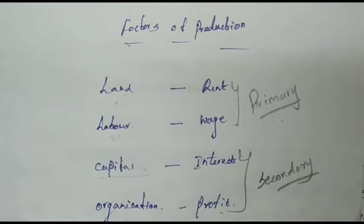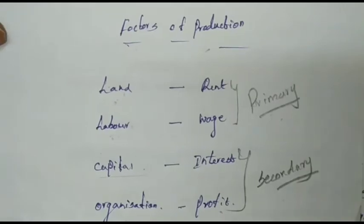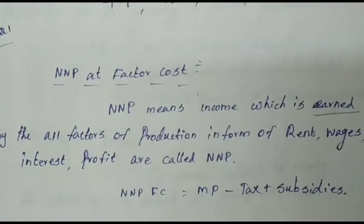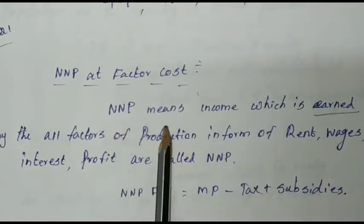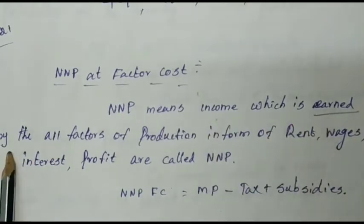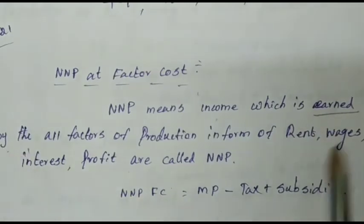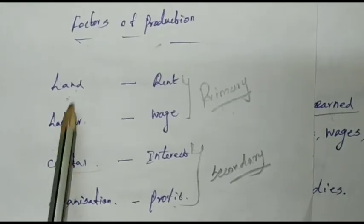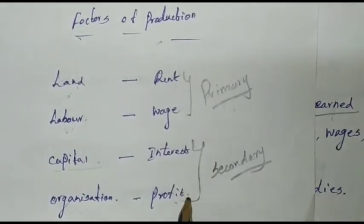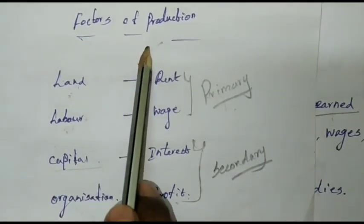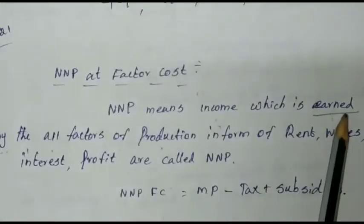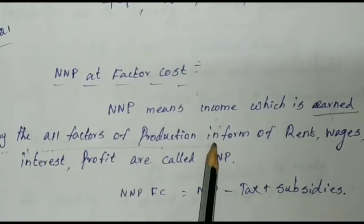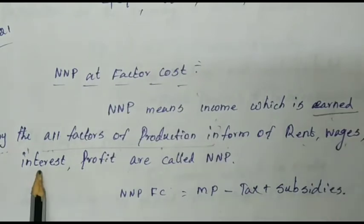The factor cost — what do we say? The factor cost refers to the income earned by all factors of production: land, labor, capital, and organizations. The income earned is in the form of wages, interest, and profit.